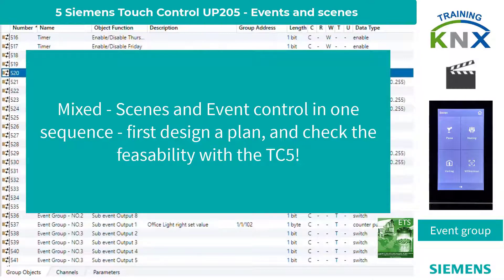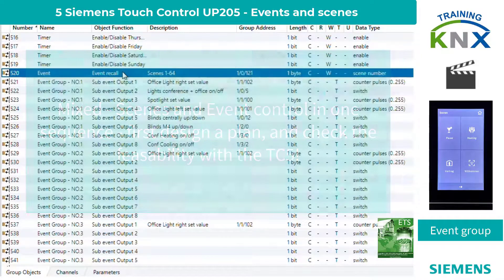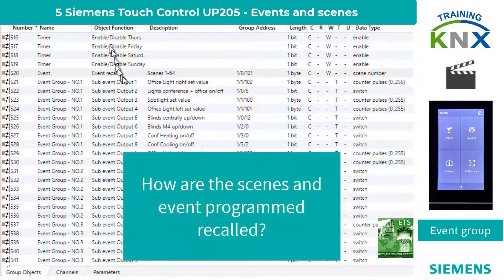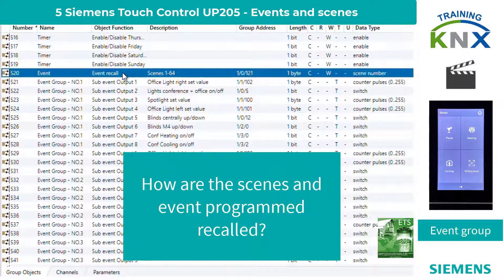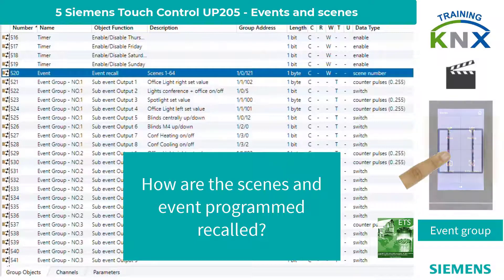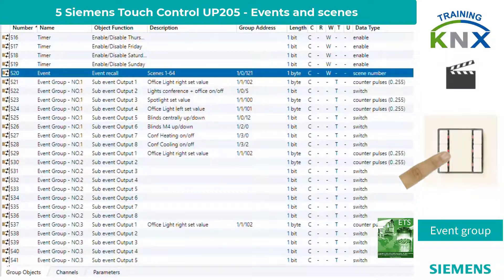To call the scenes and event programs: since they always run via object 520, they can be retrieved both via the multifunction pages of the TC5 and via external sensors such as push buttons, other operating devices, web servers, etc.